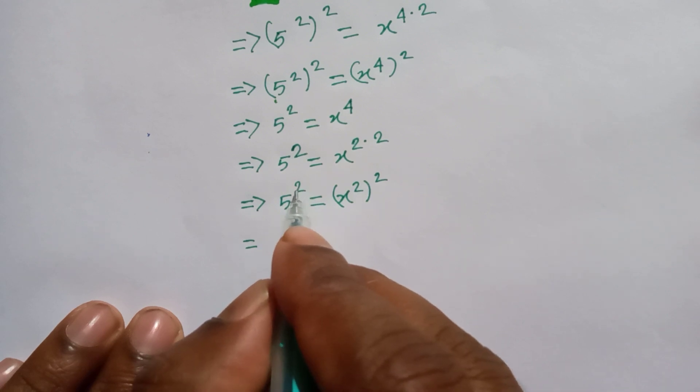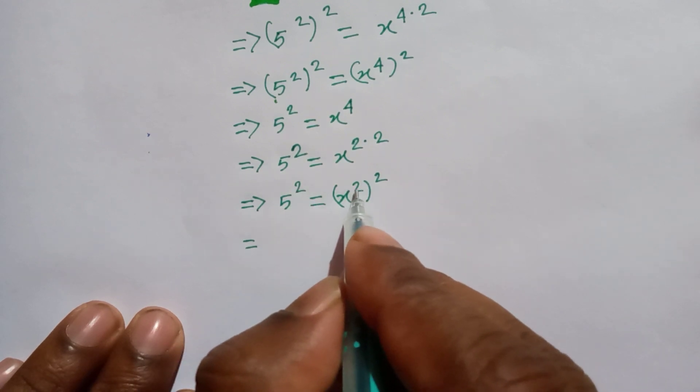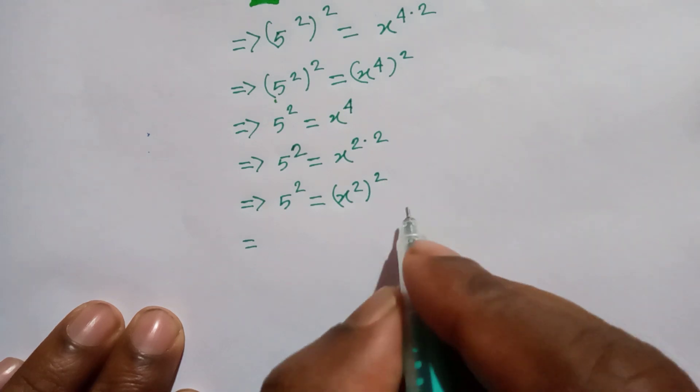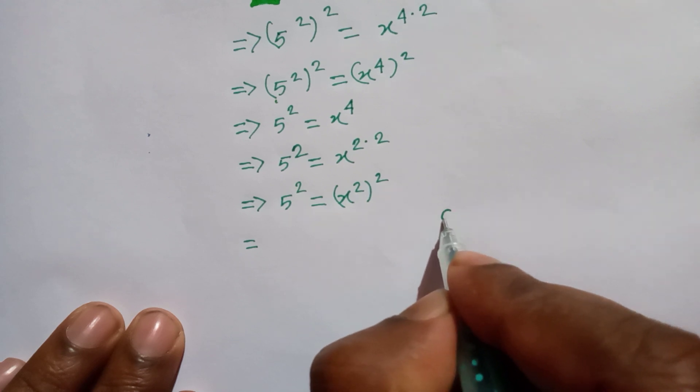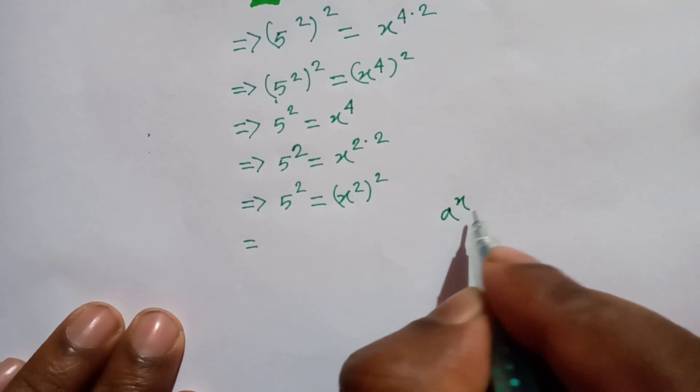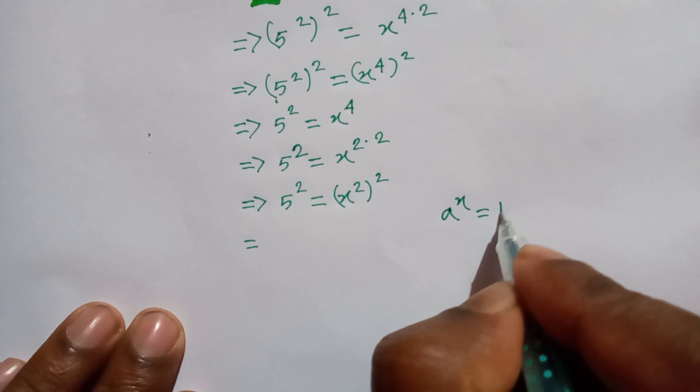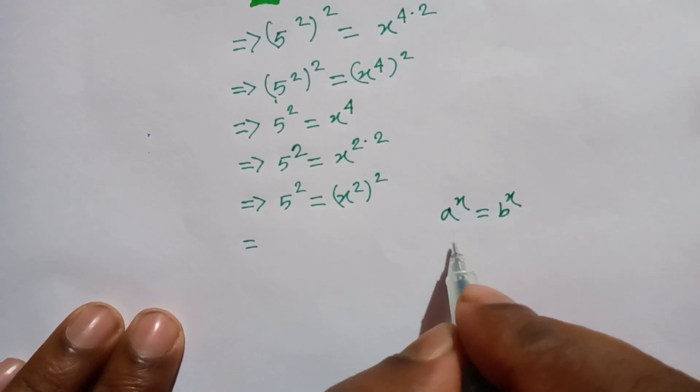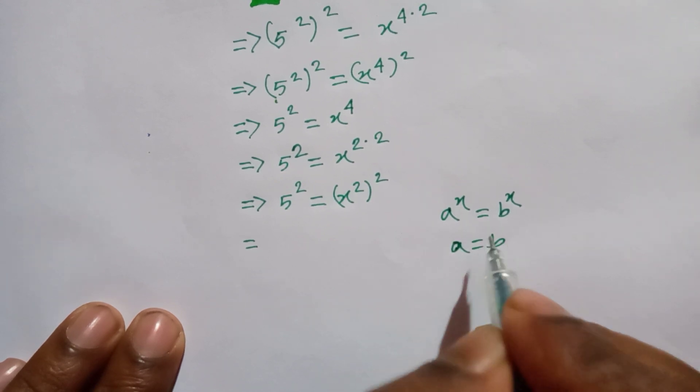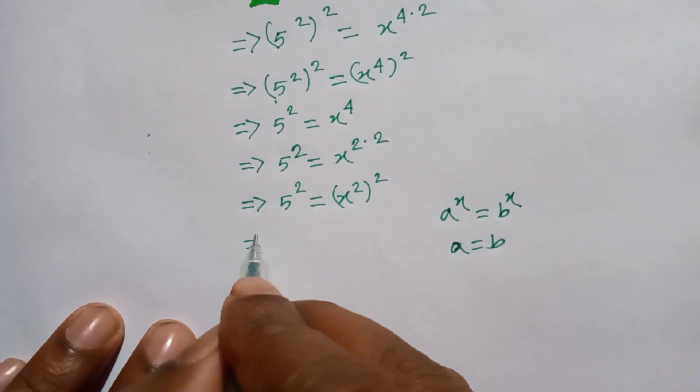And we use this formula: a to the power x is equal to b to the power x, we can write a is equal to b. So we can write 5 is equal to x square.